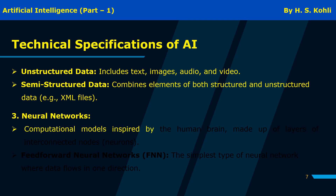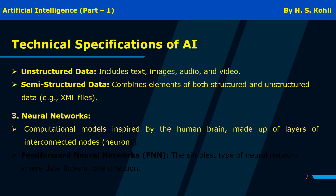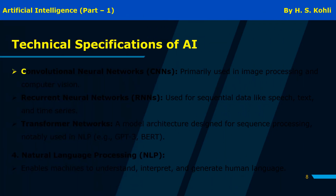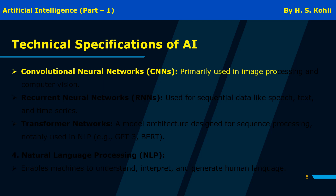Neural networks are computational models inspired by the human brain, made up of layers of interconnected nodes called neurons. Feedforward neural networks (FFNNs) are the simplest type, where data flows in one direction. Convolutional neural networks (CNNs) are primarily used in image processing and computer vision.